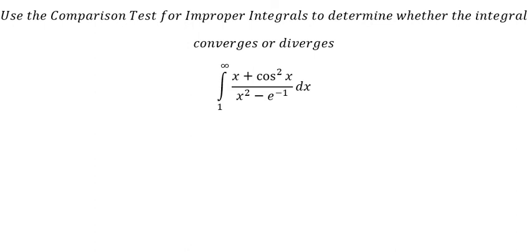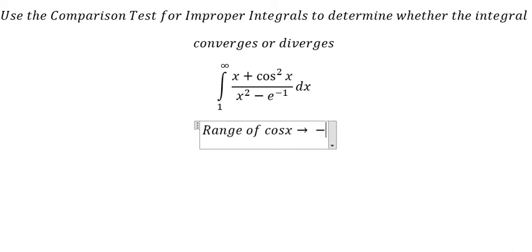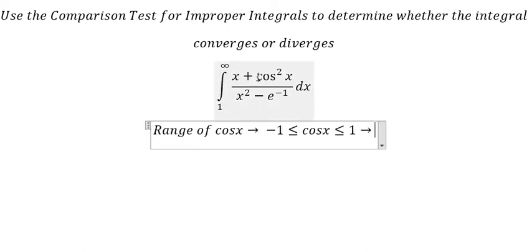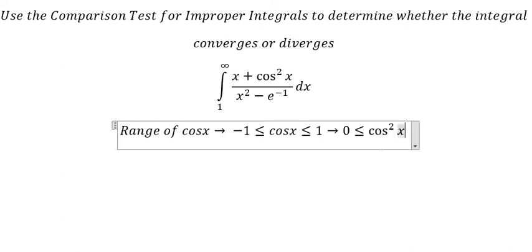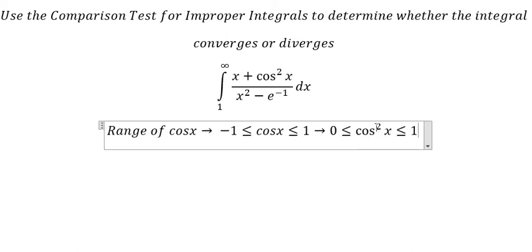Hello everybody. Today I want to talk about calculus. The topic today is about the comparison test. I want to show you how to answer. We know that the range of cosine x is from negative one to positive one. Because we have the power of two, this becomes from zero to positive one, since even powers always produce positive numbers.